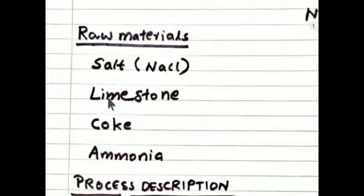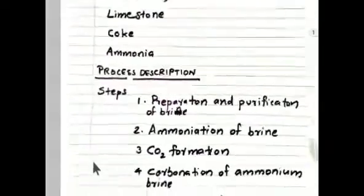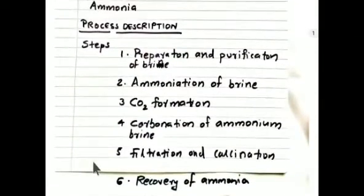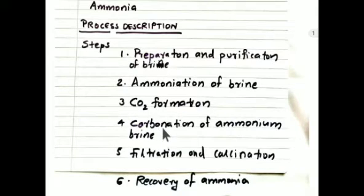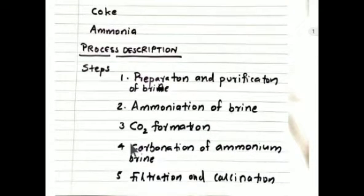The raw materials are: salt (sodium chloride), limestone (calcium carbonate), coke (a form of carbon), and ammonia. Ammonia acts as a catalyst in the Solvay process. The process has six steps: first, preparation and purification of brine; second, ammoniation of brine; third, carbon dioxide formation; fourth, carbonation of ammonium brine; fifth, filtration and calcination; sixth, recovery of ammonia.